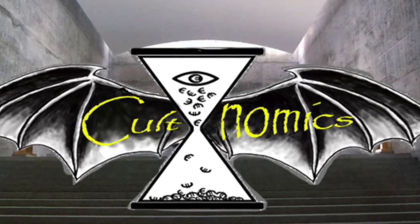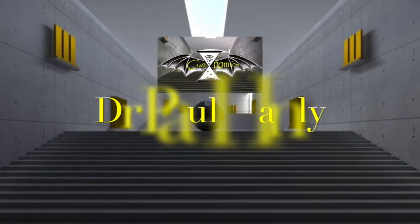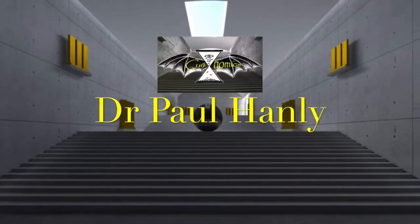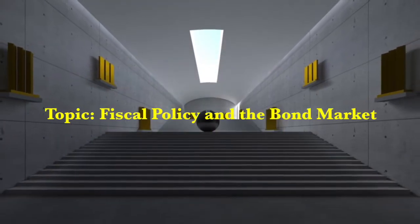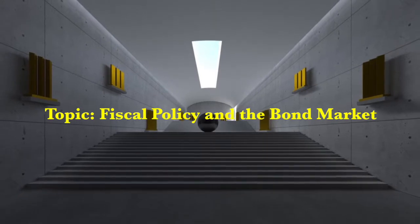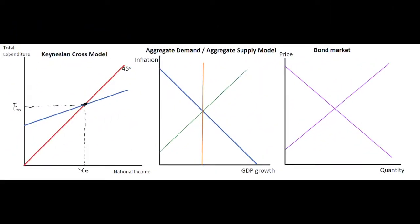Hi guys and welcome to Cultnomics. My name is Paul Hanley and today I'm going to be chatting to you about fiscal policy and the bond market. In this video we are going to look at the impact of expansionary fiscal policy on the bond market and on aggregate demand, and we have a range of models in place here.